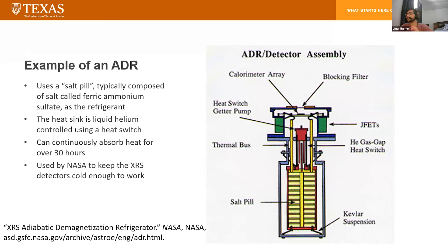Here's an example of an ADR used by NASA. There's an image showing roughly how it looks. It uses a salt pill — a pair of magnetic salts — specifically ferric ammonium sulfate. Its heat sink uses liquid helium, and apparently the system can last over 30 hours before you have to go through the cycle of magnetizing and demagnetizing again. Its main use is to cool the X-ray spectrometer (XRS) detectors that NASA uses in their space equipment.